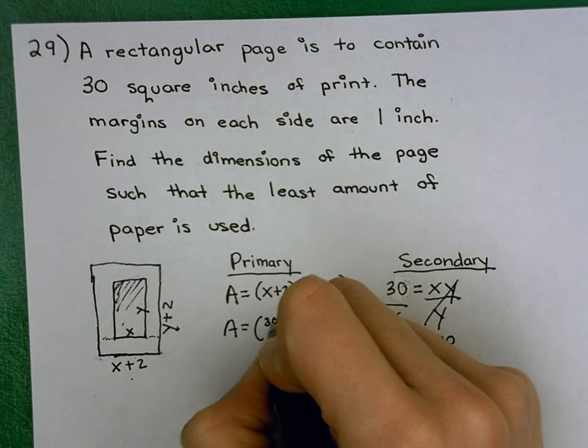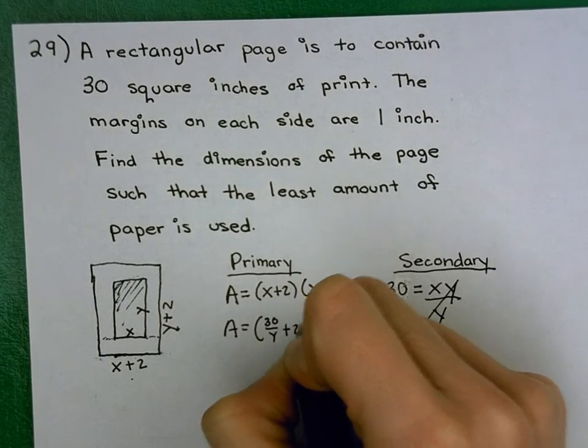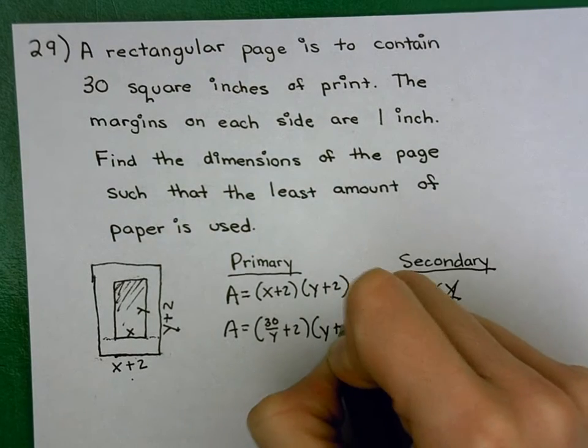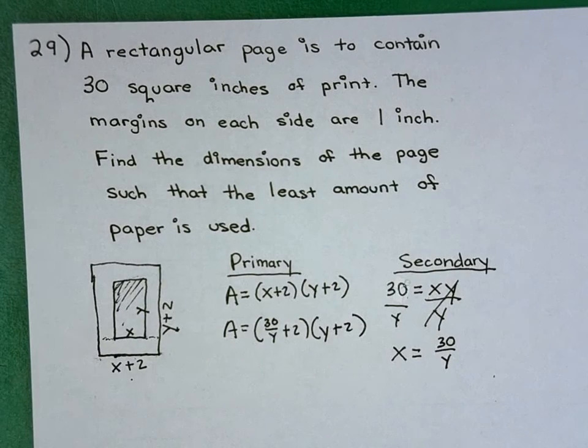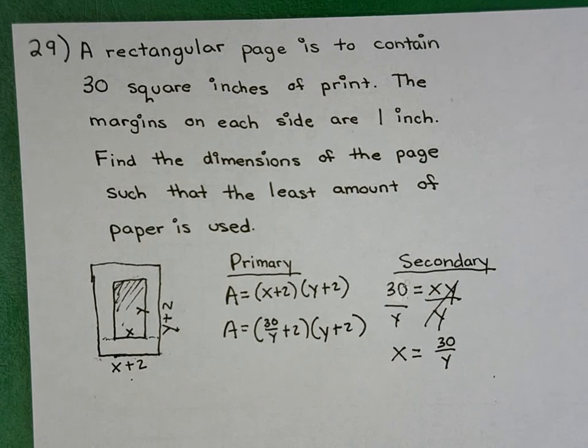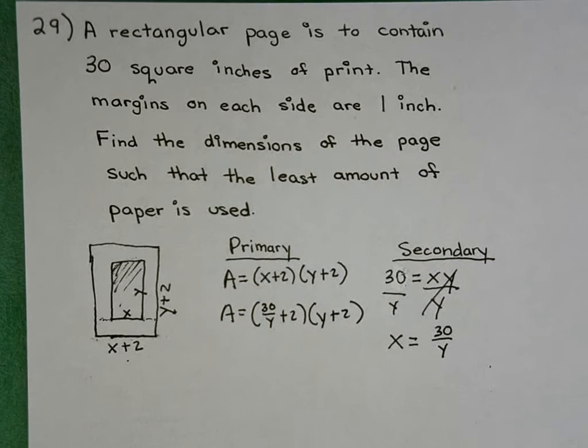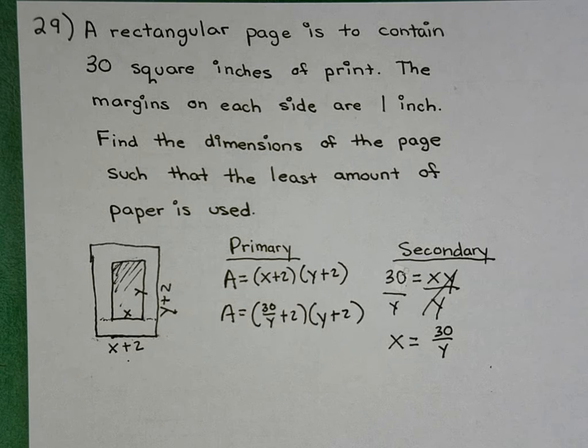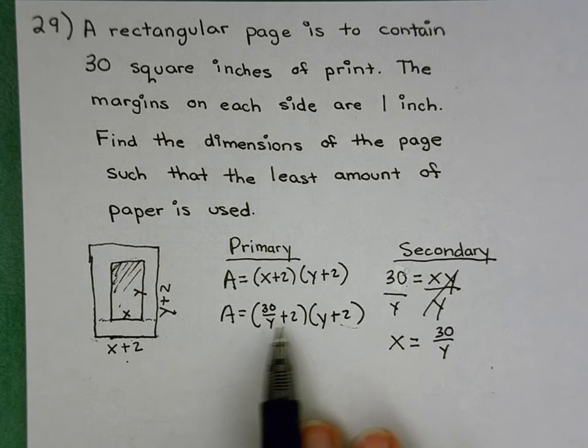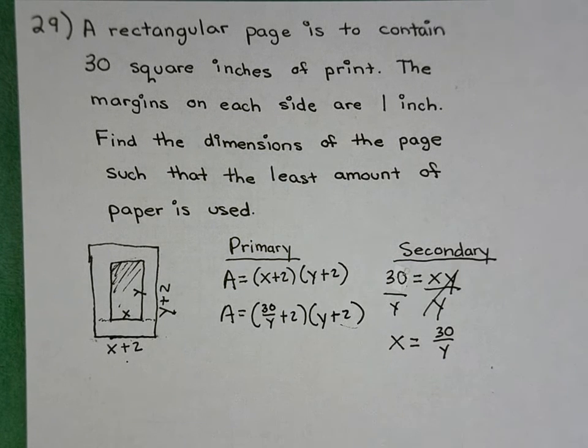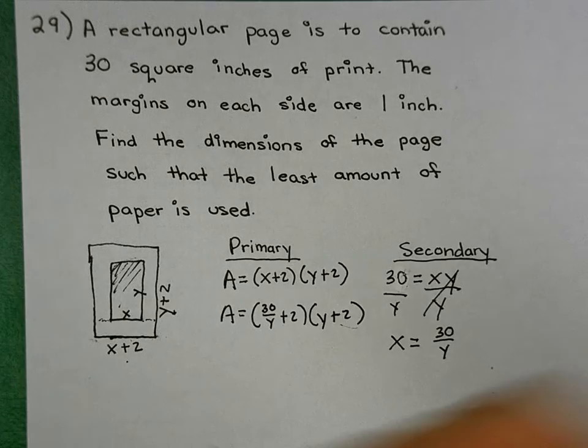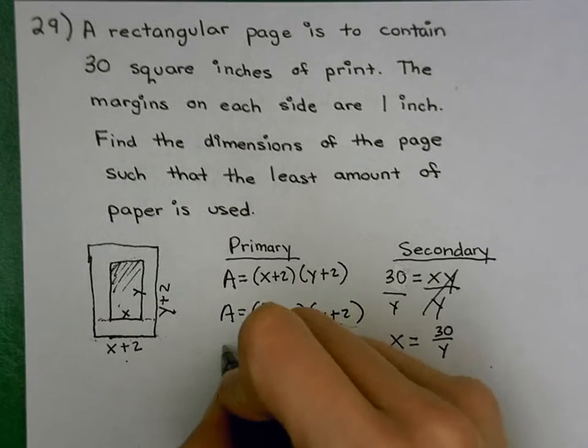Now we have the quantity of 30 over Y plus 2 times the quantity of Y plus 2. Okay, once you've substituted it in, now it's going to be a case of taking the derivative and setting it equal to 0. You could do product rule here, or you could foil it out to do power rule. I'm going to go ahead and choose to foil and do power rule.